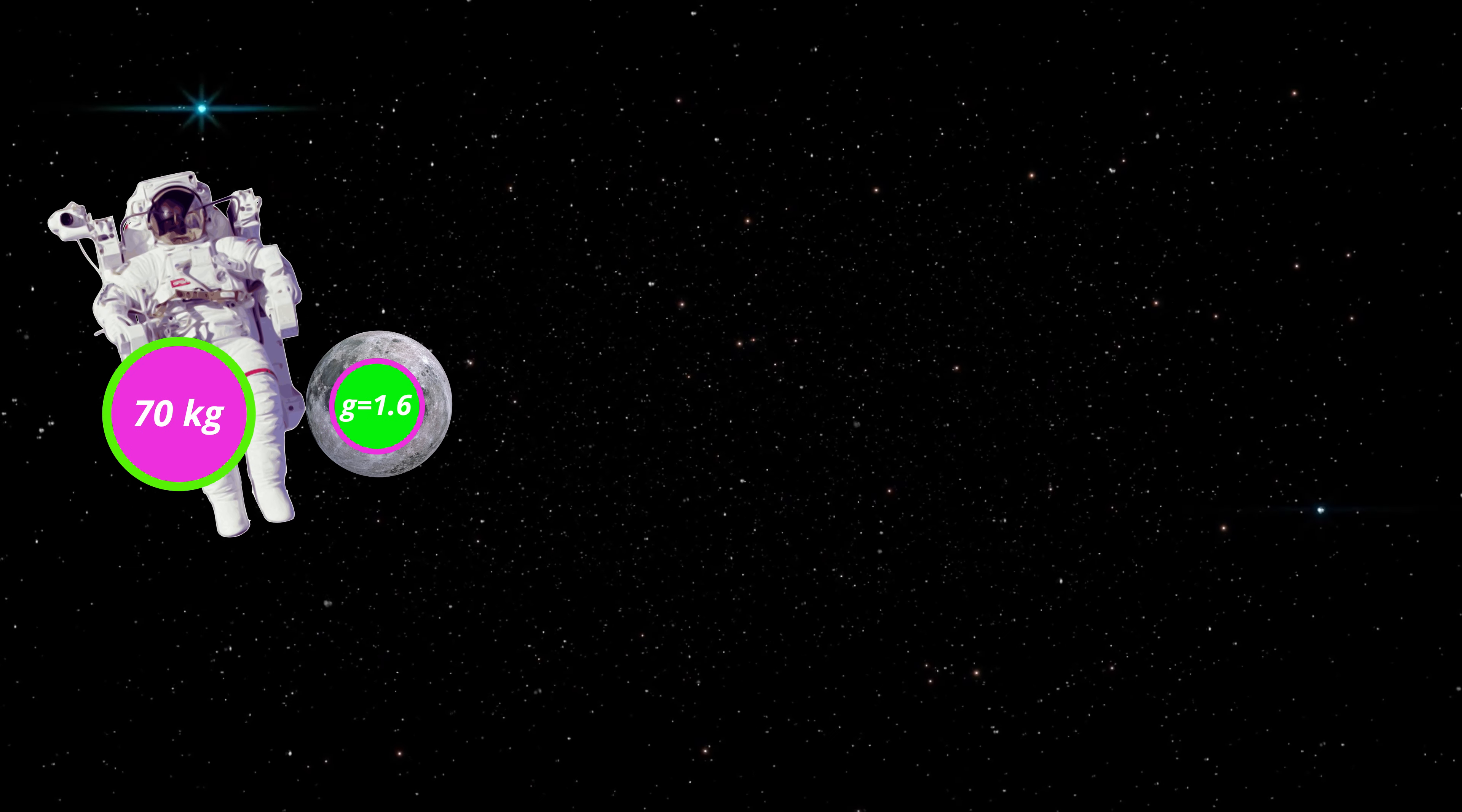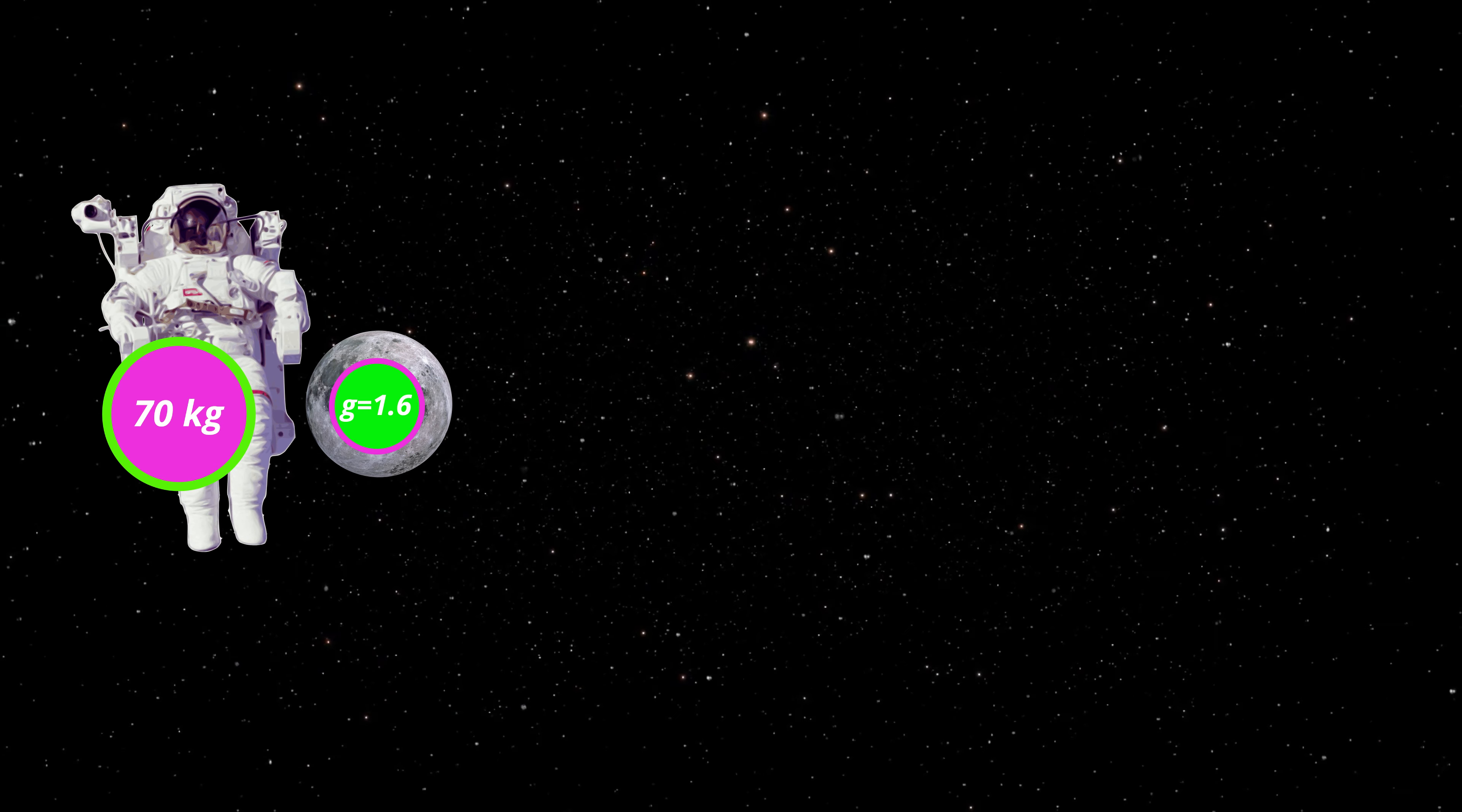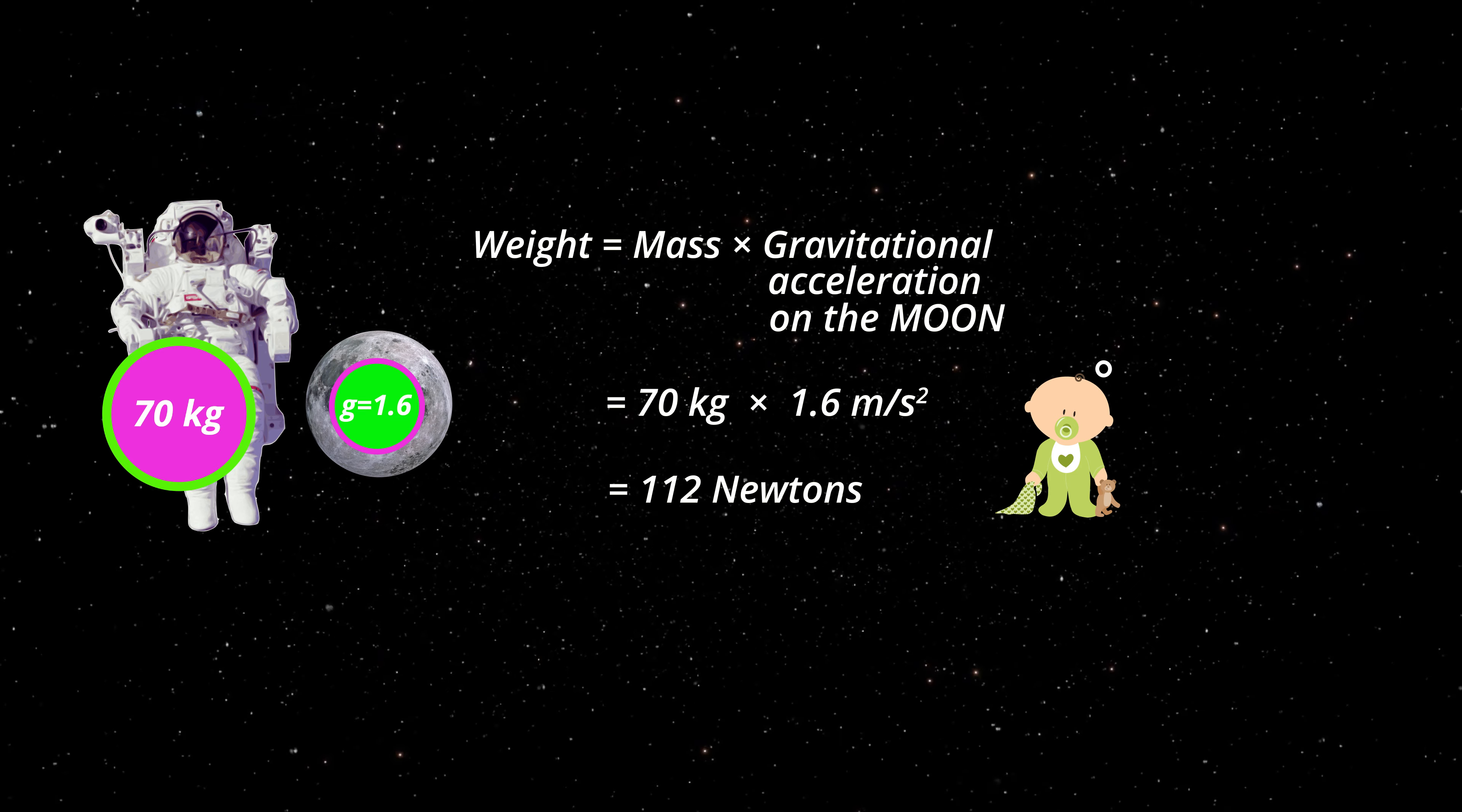The Moon is much smaller than the Earth, so its gravitational acceleration is only 1.6 metres per second squared. Her weight on the Moon equals her mass of 70 kilograms multiplied by the Moon's gravitational acceleration of 1.6. Her weight is only 112 newtons. Let's put that in perspective. This astronaut weighs the same as a one-year-old child on Earth.